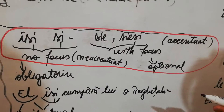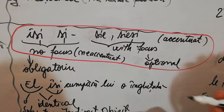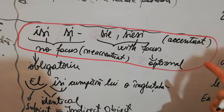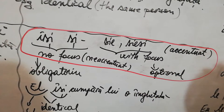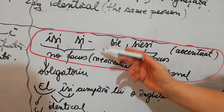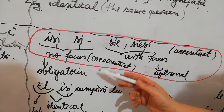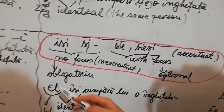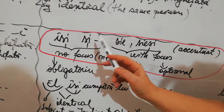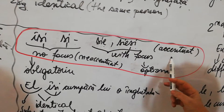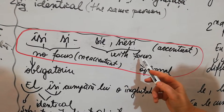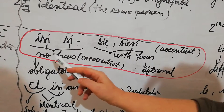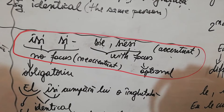Now let's go to the reflexive pronoun. The reflexive pronoun wants to borrow a form, but the personal pronoun says: 'No, I don't give it to you because you have your own form this time - use yours.' The reflexive uses its own form for the third person singular: 'își', 'și' with no focus, and 'sie', 'sieși' with focus - accentuat.